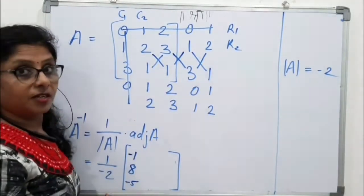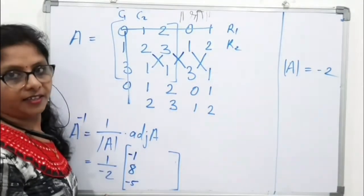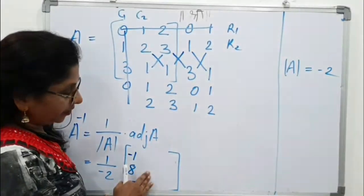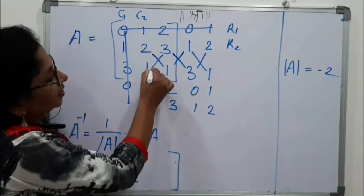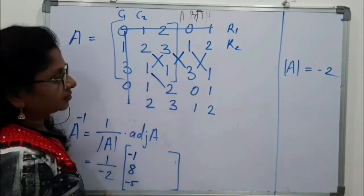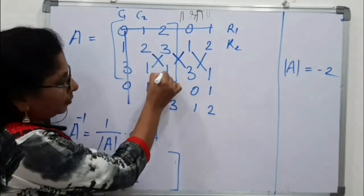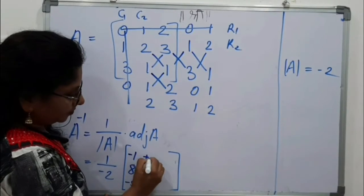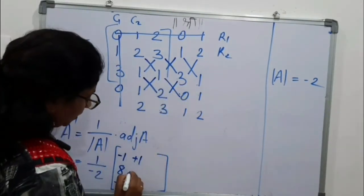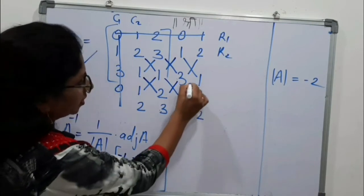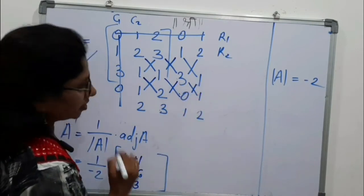If you observe, I am multiplying horizontally and writing vertically. Same thing we have to do for second column. So, 1 into 2, 2 minus 1, that is plus 1. Now 0 minus 6, that is minus 6. 3 minus 0, that is 3.